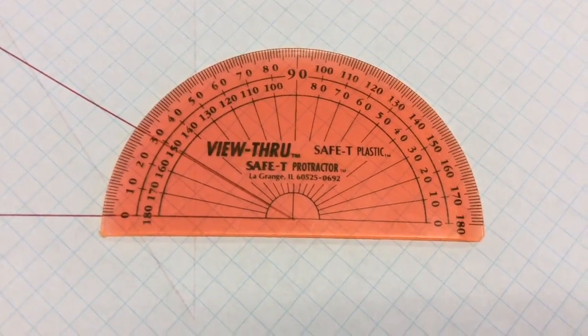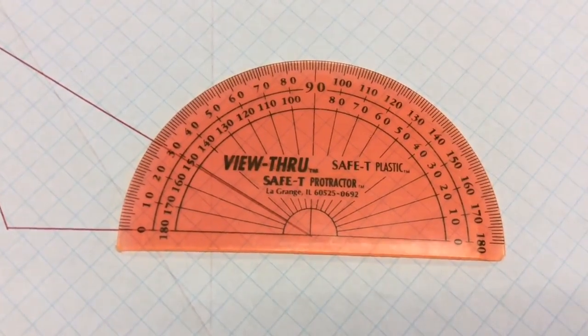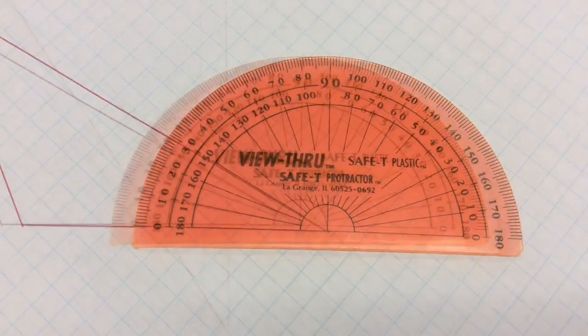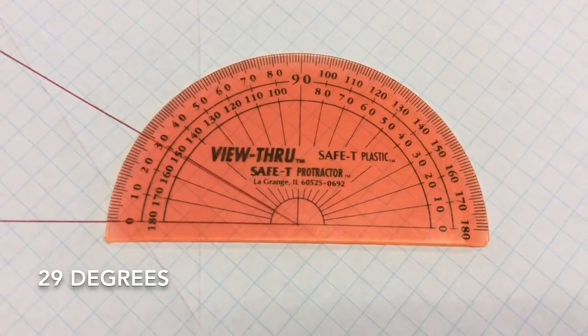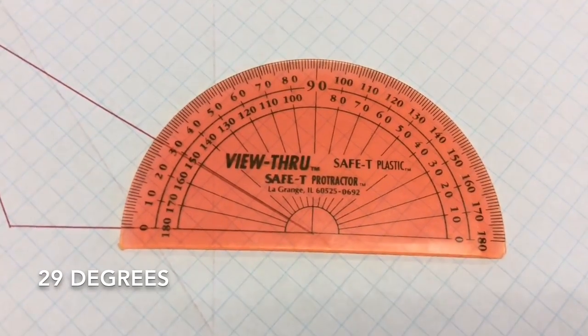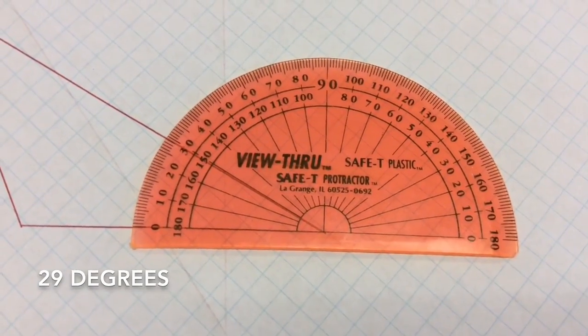Last one for practice. Stop it. Take a look at it. Figure out what that angle is. It's just under 30 at 29 degrees. Carefully line up that vertex and that bottom line. It's important.